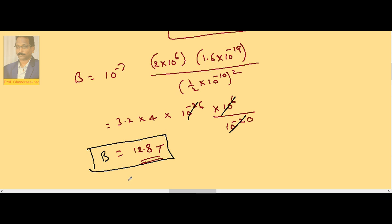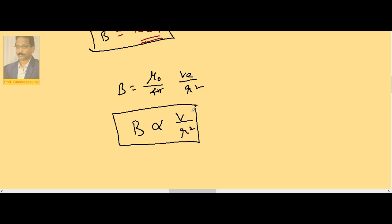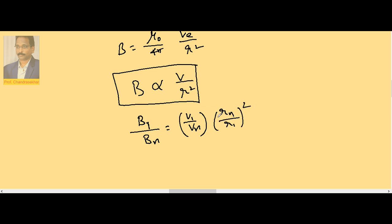Now we have the general equation: B = (μ₀ / 4π) × (ve / r²), or simply B ∝ v / r². To compare the magnetic induction in the first orbit and the nth orbit, we write B₁/Bₙ = (v₁/vₙ) × (rₙ/r₁)².